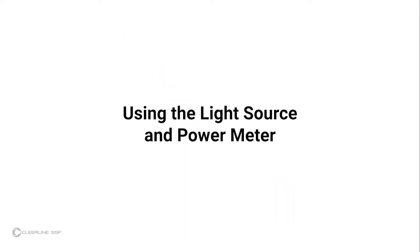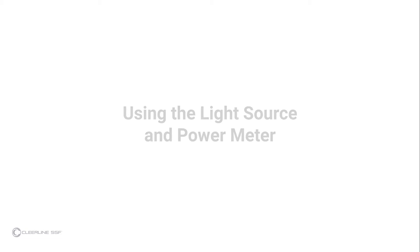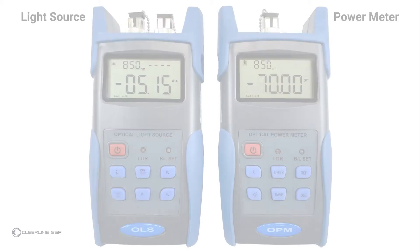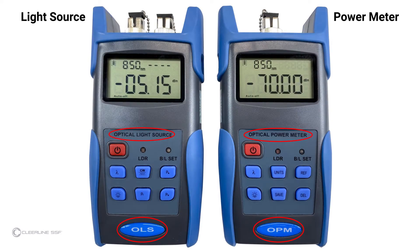Using the light source and power meter: for full information on light source and power meter functions, refer to the included instruction manual. The light source and power meter can be identified by labels on the front of each unit. The keys and indicators included on both units are the following.